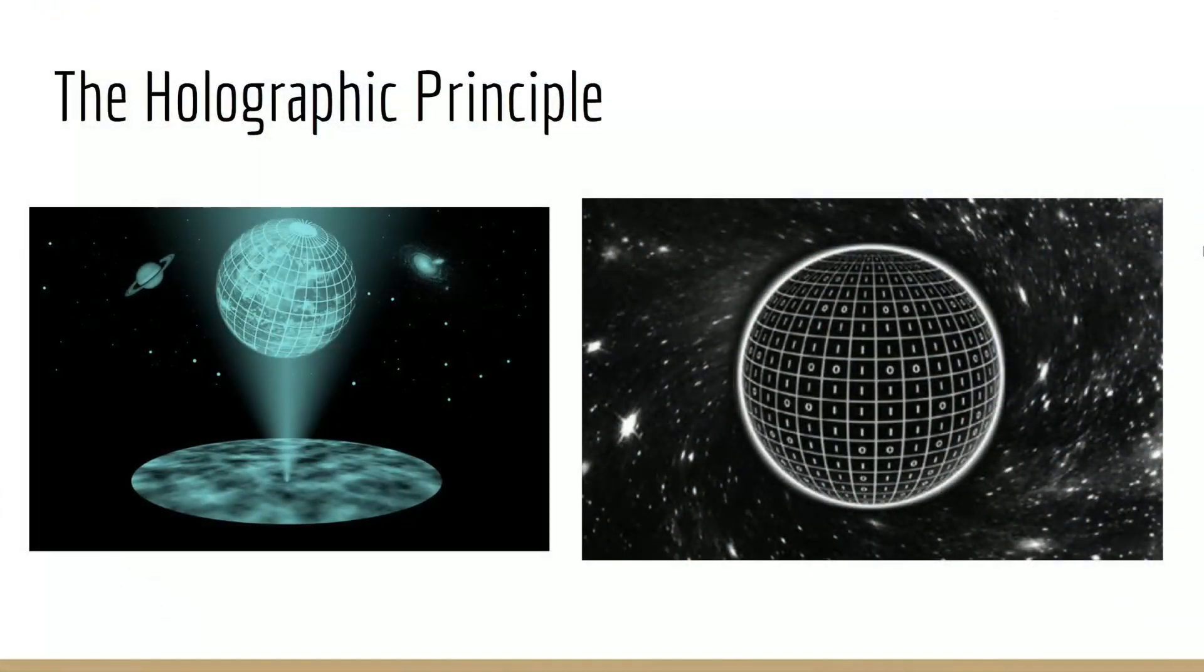Adding on to the idea of entanglement is this idea of the holographic principle, which is this theory by Professor Leonard Susskind, which is that maybe our whole three-dimensional universe is actually just modeled by information on a 2D sheet. It's called the holographic principle because you can think of it like a hologram that's being projected onto a 3D space by a flat 2D screen.